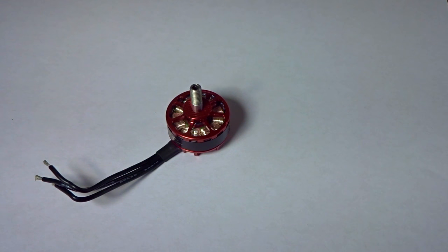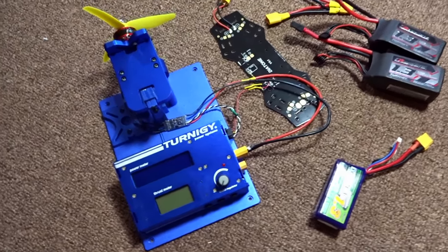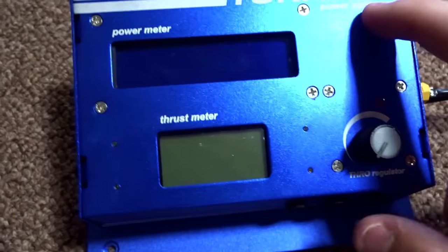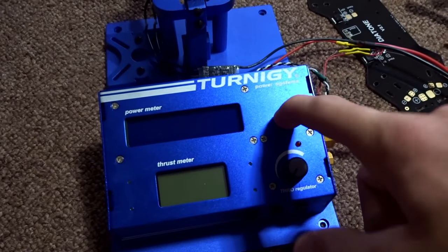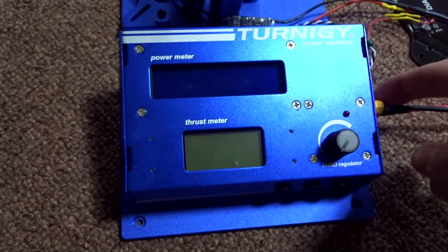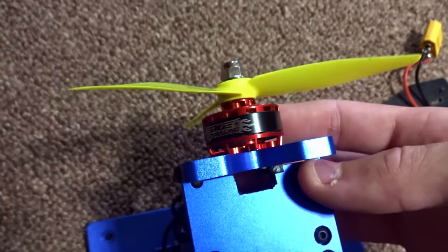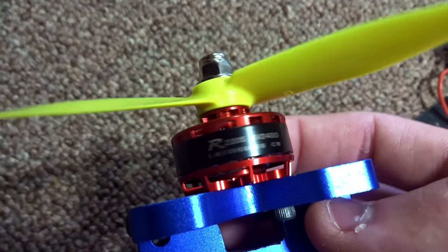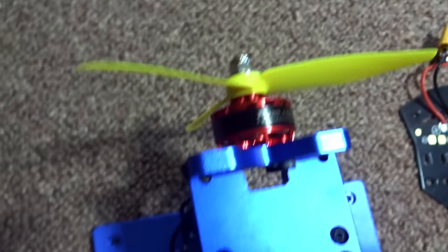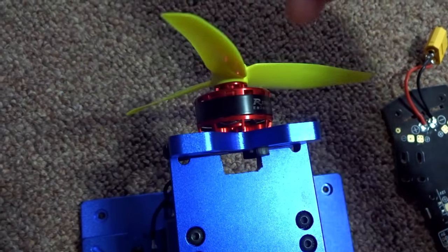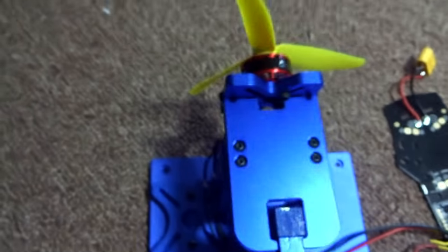Here we are with the thrust stand. Let me explain the apparatus. Here's our Turnigy V2 thrust meter which will record amperage, wattage, voltage, and grams in push or pull. That's why I have the motor mounted upside down with the propeller upside down. It'll generate full thrust pushing down, giving us cleaner audio.